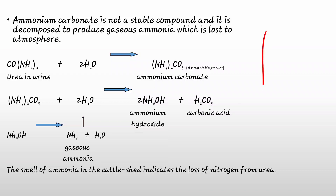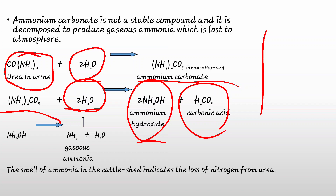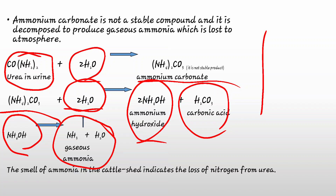Urea in urine (CO(NH₂)₂) reacts with water to form ammonium carbonate, which is unstable. Ammonium carbonate again reacts with water to form ammonium hydroxide and carbonic acid. Ammonium hydroxide then breaks down to form gaseous ammonia and water. This gaseous ammonia evaporates easily — the smell of ammonia in the cattle shed indicates the loss of nitrogen from urea in urine.